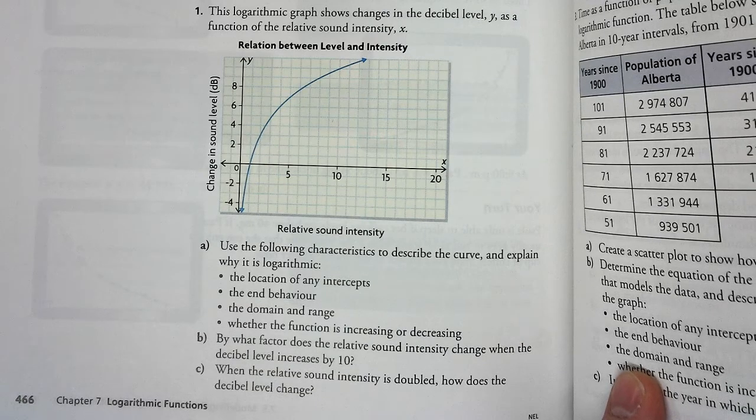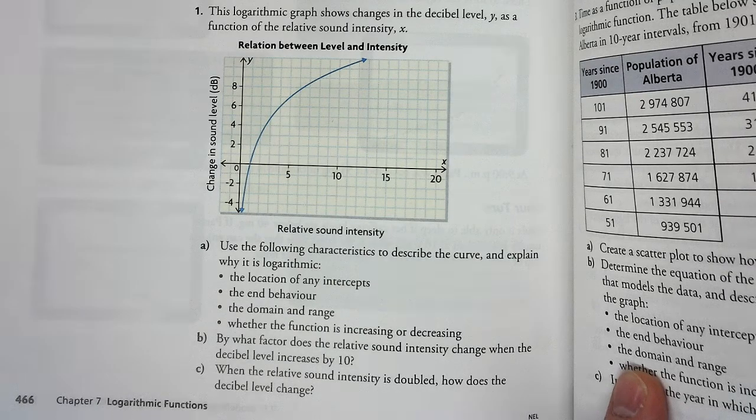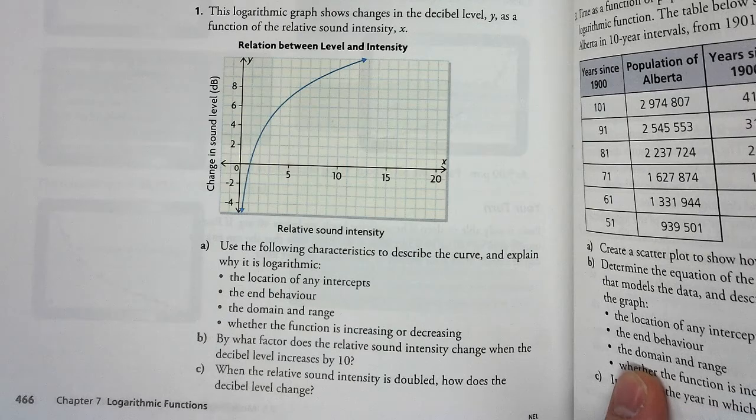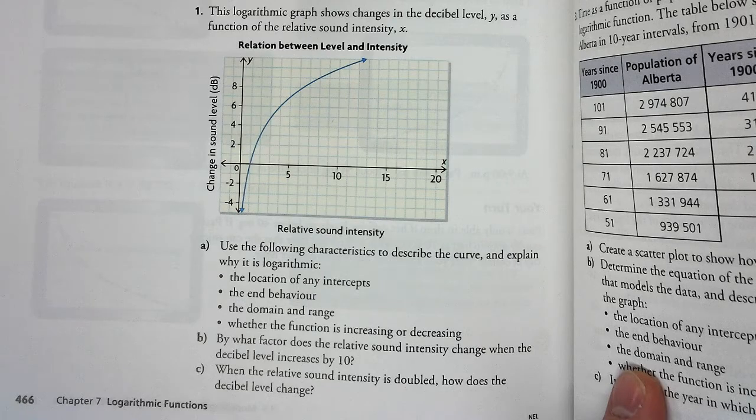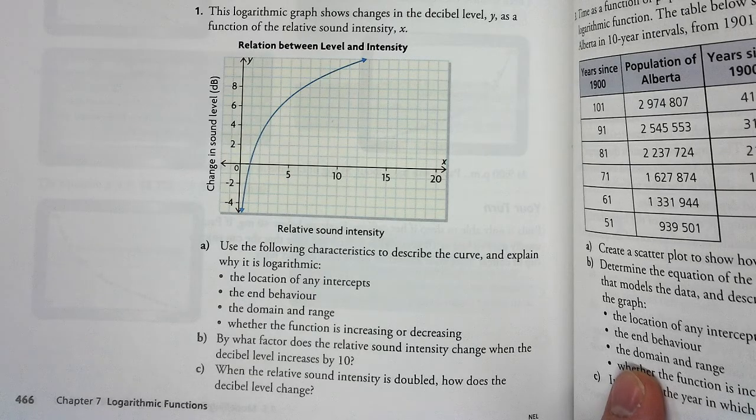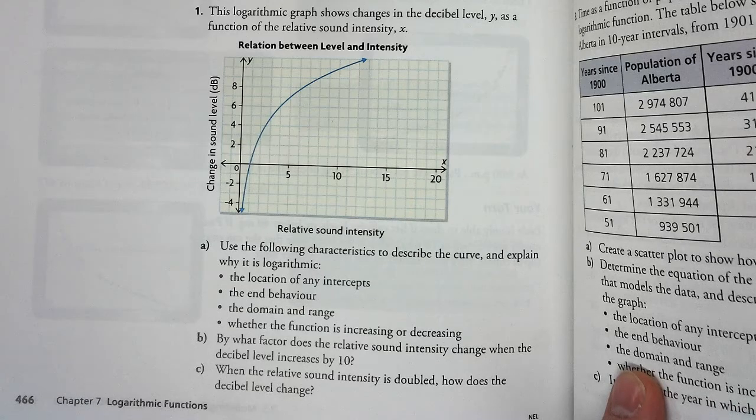This logarithmic graph shows the changes in the decibel level y as a function of the relative sound intensity x. We want to use the following characteristics to describe the curve and explain why it's logarithmic. The location of any intercepts: we do have one intercept at x equals 1. There is no y-intercept.